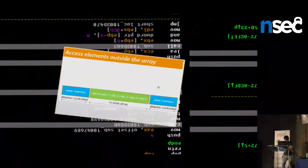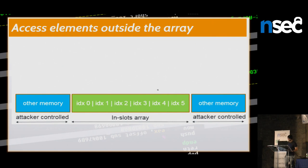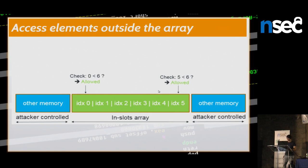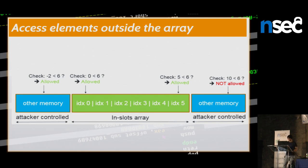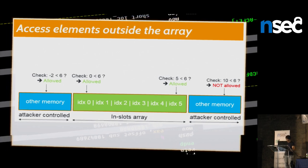The green block represents my array with a capacity of six elements. Accessing index zero (less than six) or index five (also less than six) is allowed. Accessing index ten is outside the array bounds and not allowed. But with this vulnerability inside the array.reduceRight function, I can wrap the index to a negative number, which always bypasses the bounds check — so I can access memory in front of my array, which is under my control.